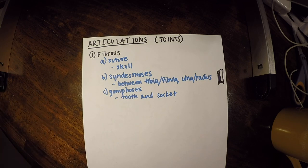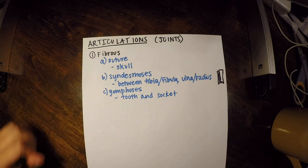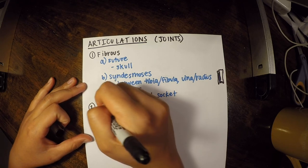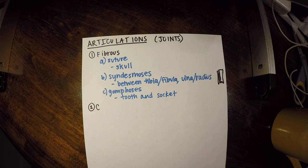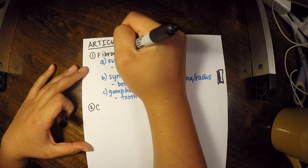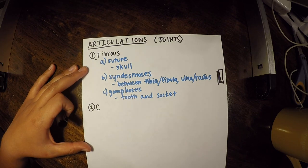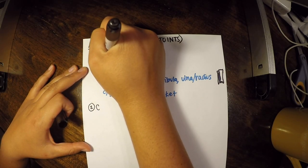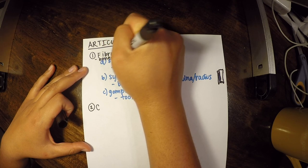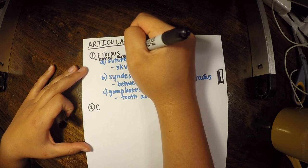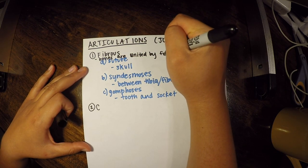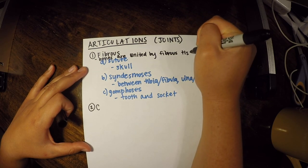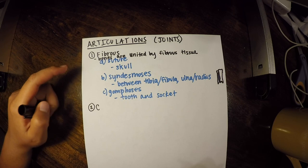Fibrous joints usually allow for the least amount of motion. What makes a fibrous joint a fibrous joint is that the bones are united by fibrous tissue.